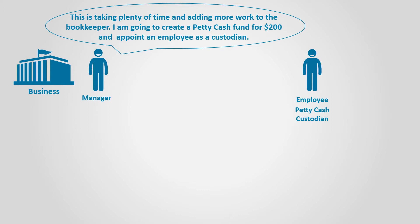The custodian is responsible to pay and reimburse the Petty Cash and collect receipts. When the employee is about to run out of money, the management replenishes the fund after taking the receipts and recording all transactions at once. Let's see how that works.